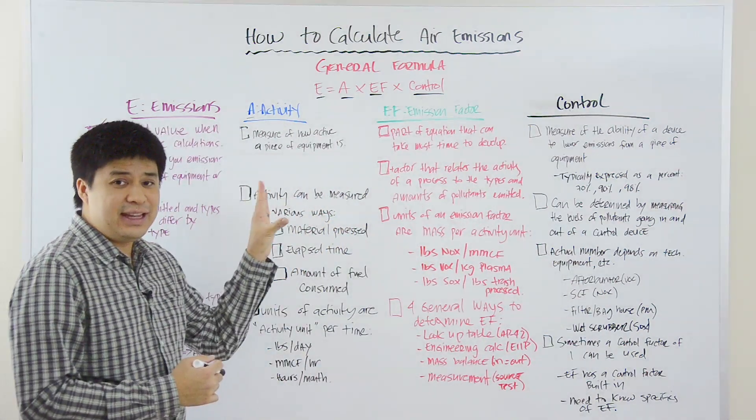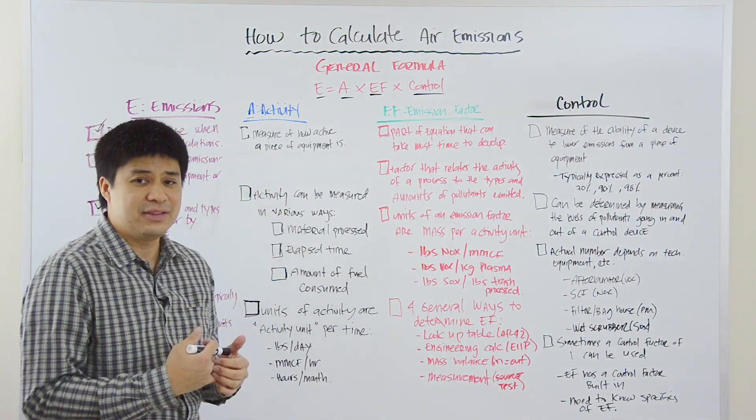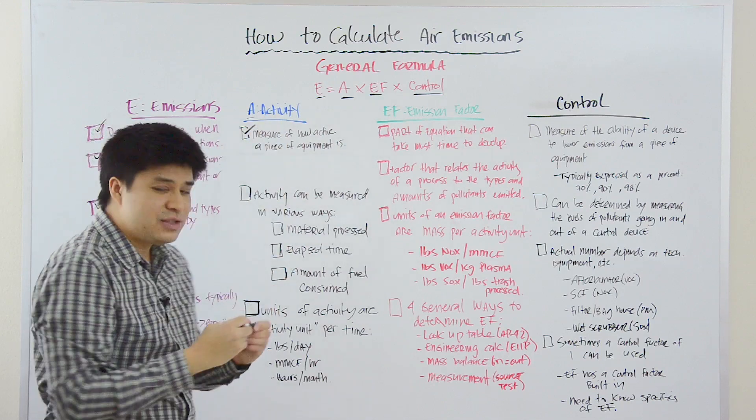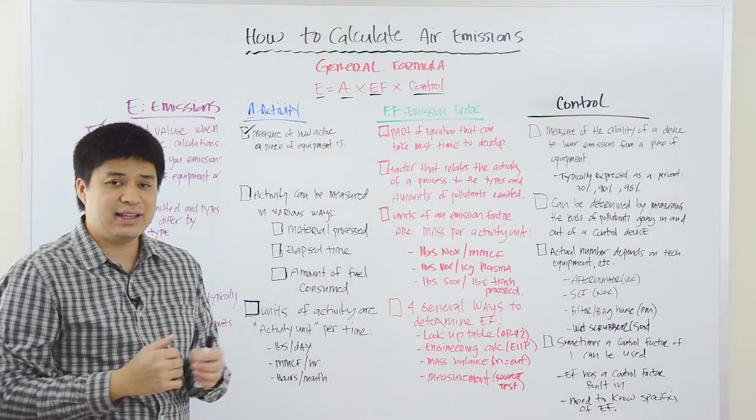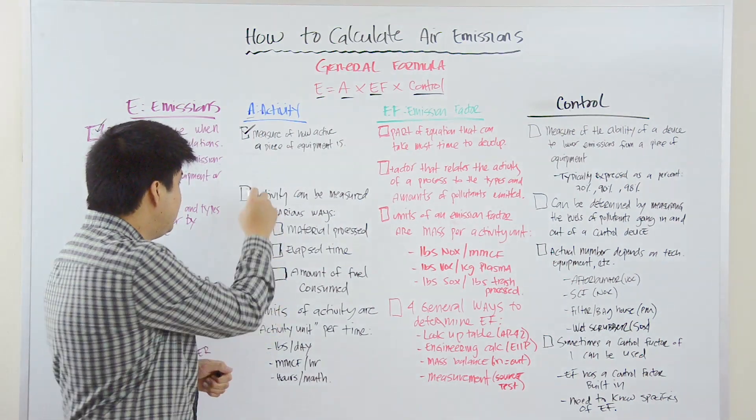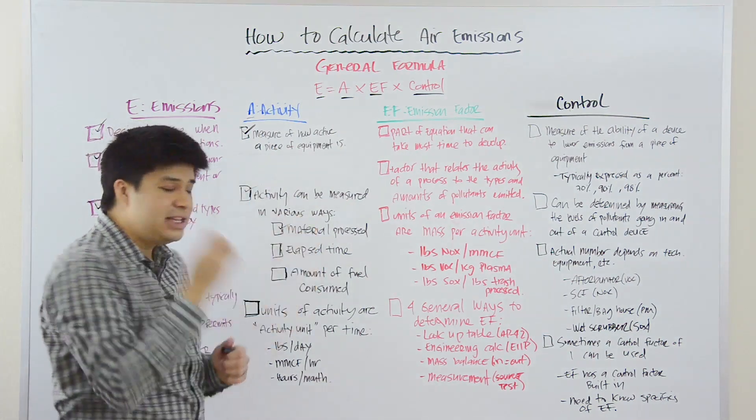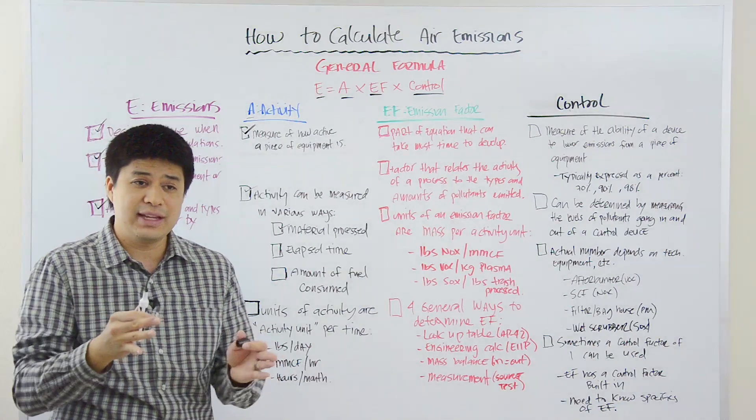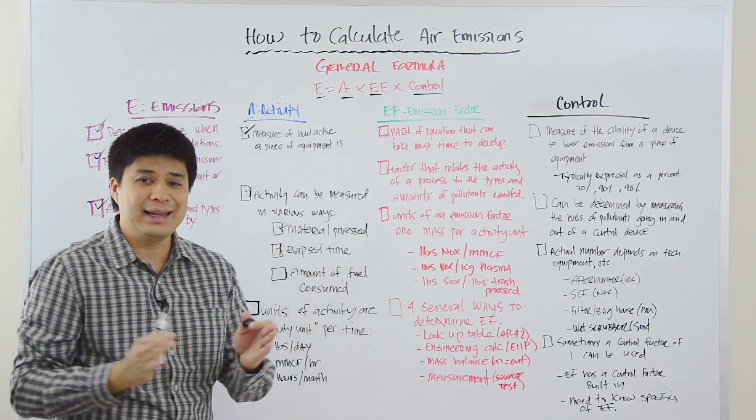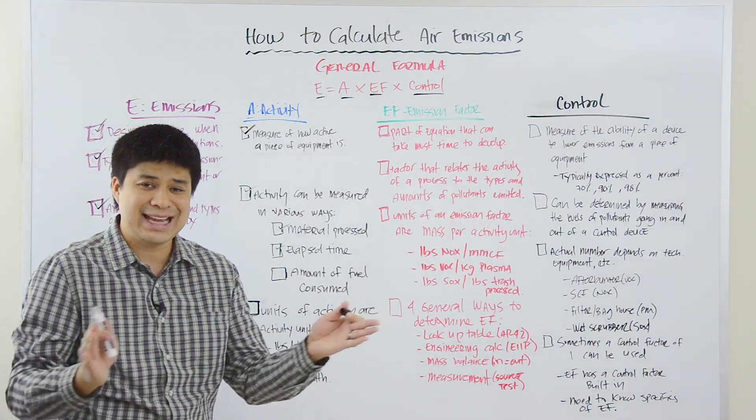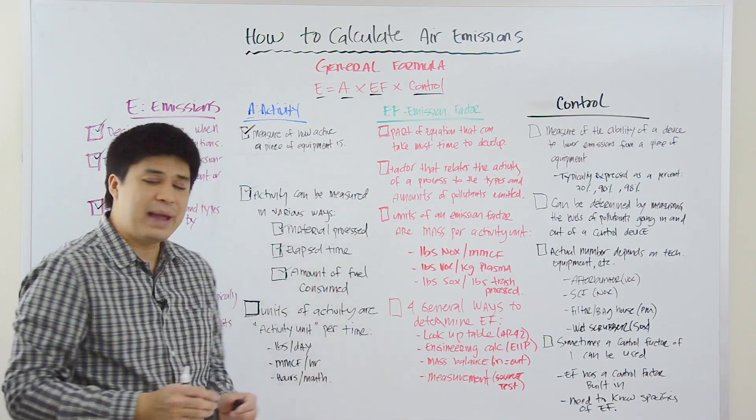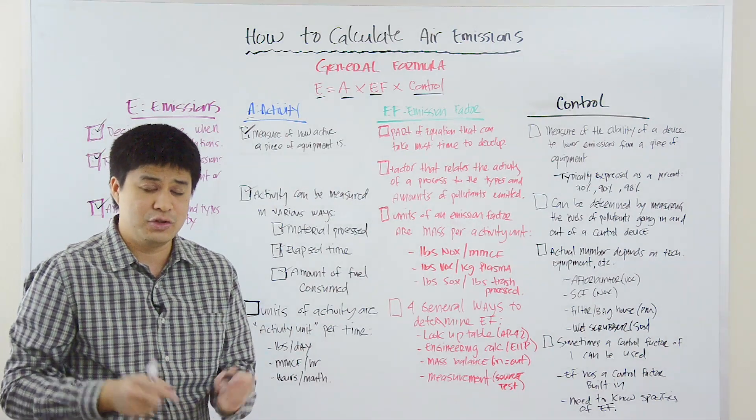The activity is really a measure of how active a piece of equipment is. Now, there are various ways that you can actually calculate the activity or quantify the activity of a piece of equipment. You can use material process, either raw material or finished product. You can use the elapsed time, how many hours or how many minutes or how many seconds has this thing been operating. Or, you can base it off the amount of fuel that's consumed per unit time.